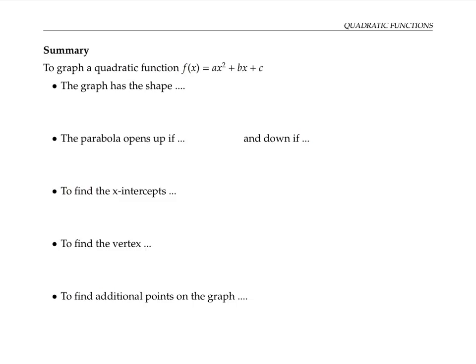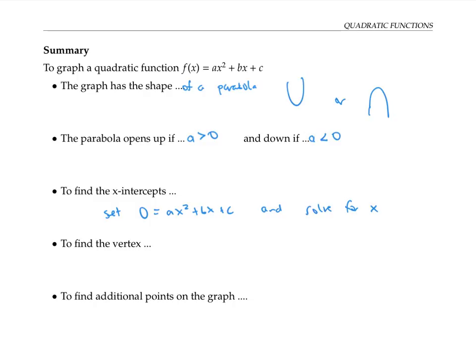To summarize, the graph of a quadratic function has the shape of a parabola. It opens up if a > 0 and down if a < 0. To find the x-intercepts, set y = 0 and solve for x. To find the vertex, take the x-coordinate as −b/(2a) and plug in to find the y-coordinate. To find additional points on the graph, plug in x values and get y values as needed.